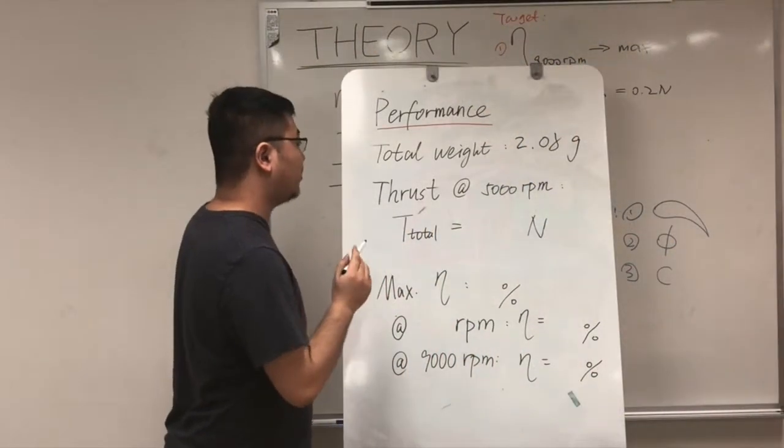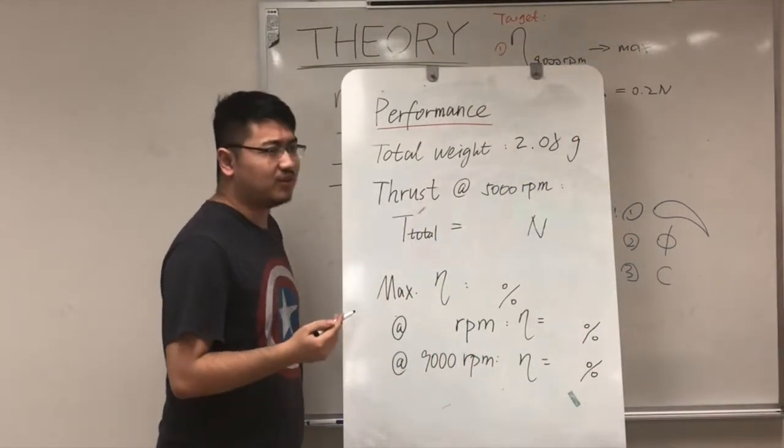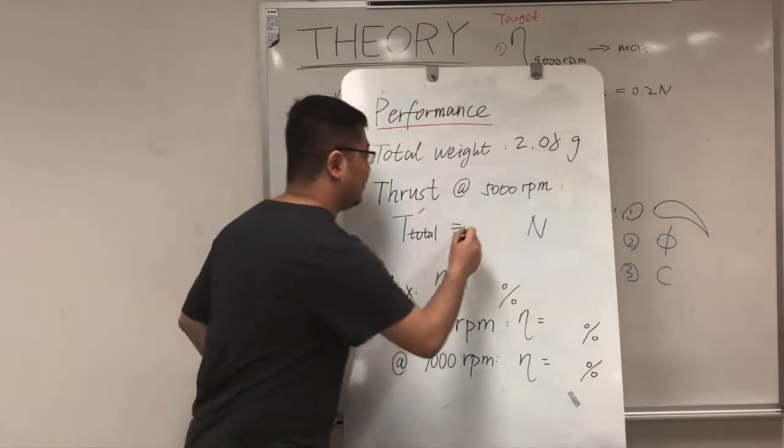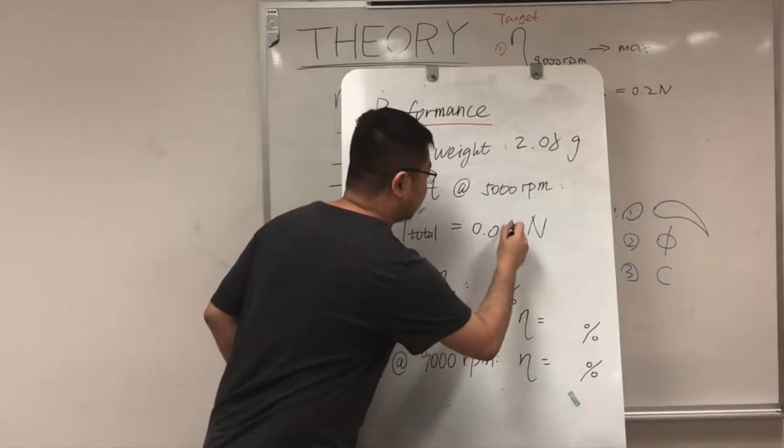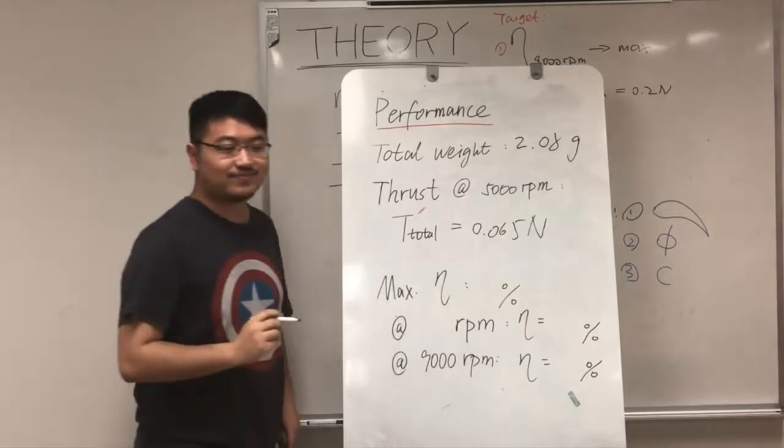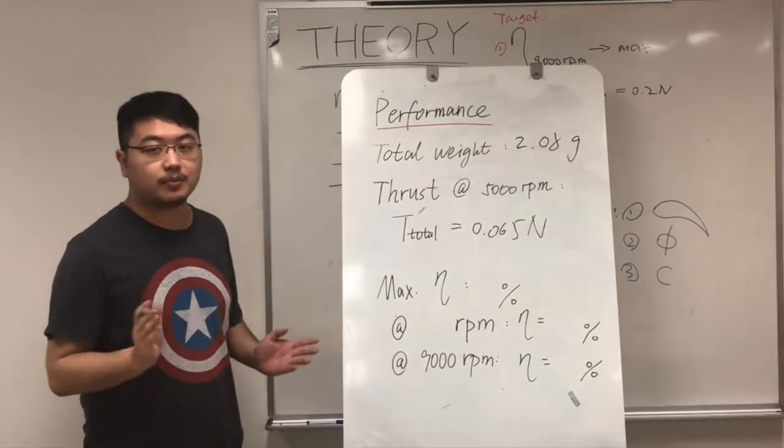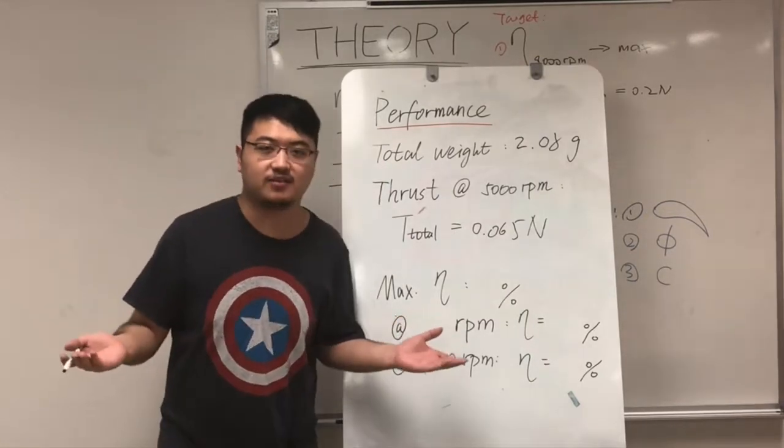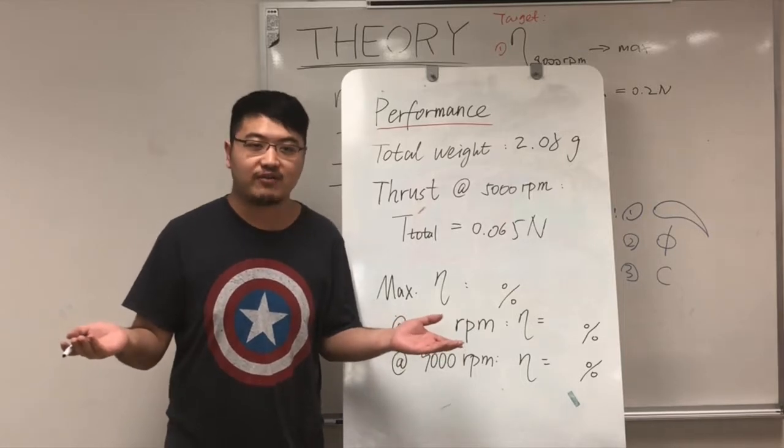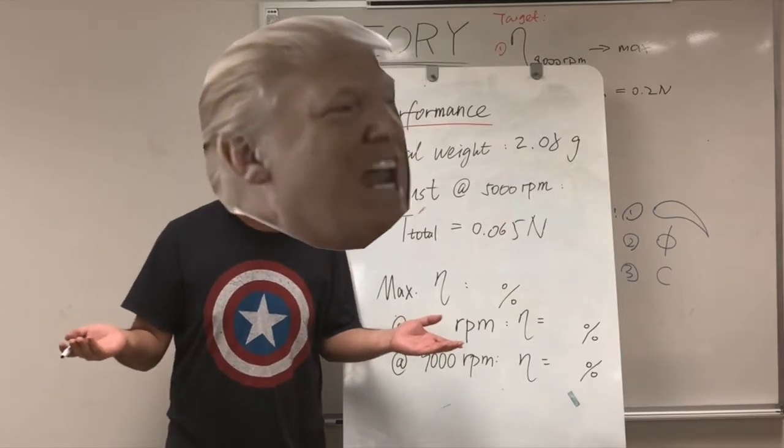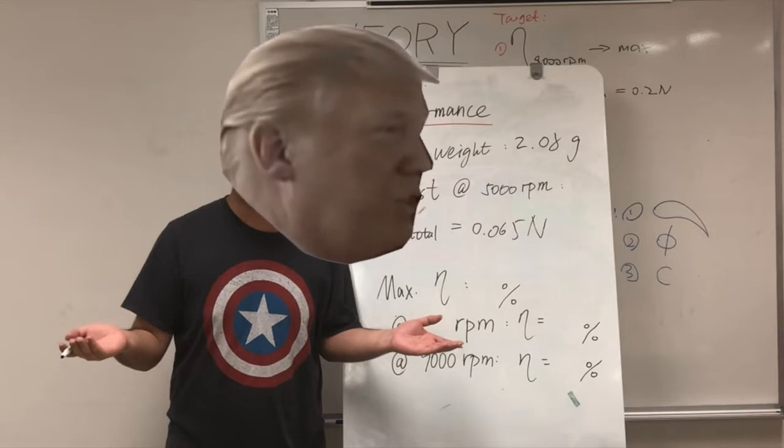And the thrust at 5000 RPM. Well, it's really amazing, I think. So it's about 0.065 N. Yeah, about 30%. Yeah, really amazing. It's even lower than the mid-term average. Good morning. Today, I'm very proud of myself.